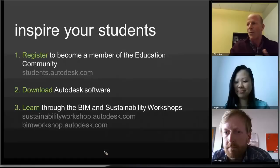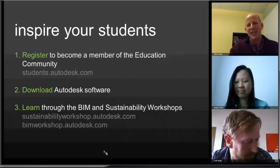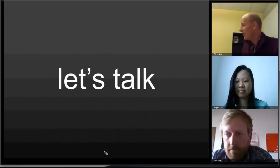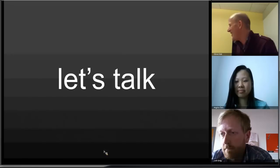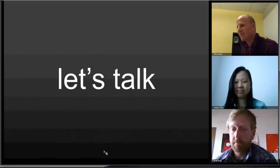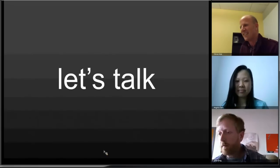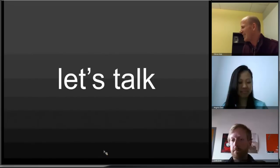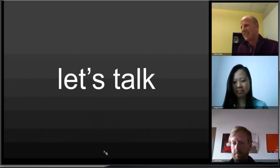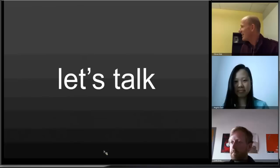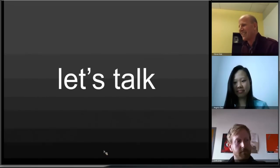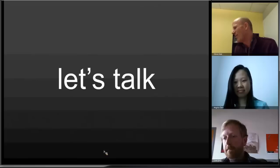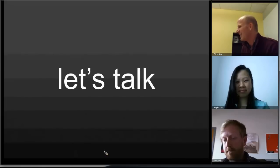The key is we want you to be able to get started today and start using it in your classrooms. Register with the Autodesk Education Community at students.autodesk.com to get the free software. You can also download the Revit 2013 trial version. Project Vasari is another great tool for sustainability analysis and eco design. Register with the community, download the software, and use these workshops to help yourself learn about the tools and give your students something to work with. We're now opening up the floor for Q&A.